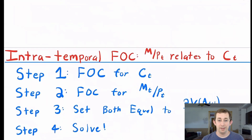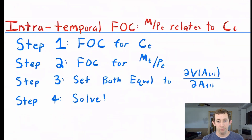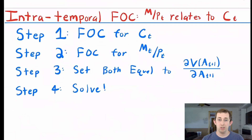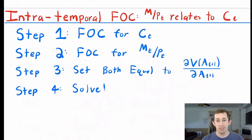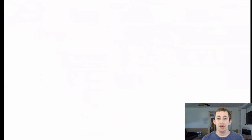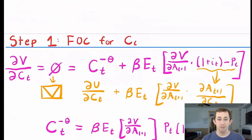Now let's think about an example of an intratemporal first order condition — specifically, how does real money demand relate to consumption in any given period. We're going to take the first order condition for consumption and real money demand in a given period, set both equal to DV of A_{t+1} over DA_{t+1}, because we'll see that term comes up in both equations, and use that relationship to solve the first order condition.